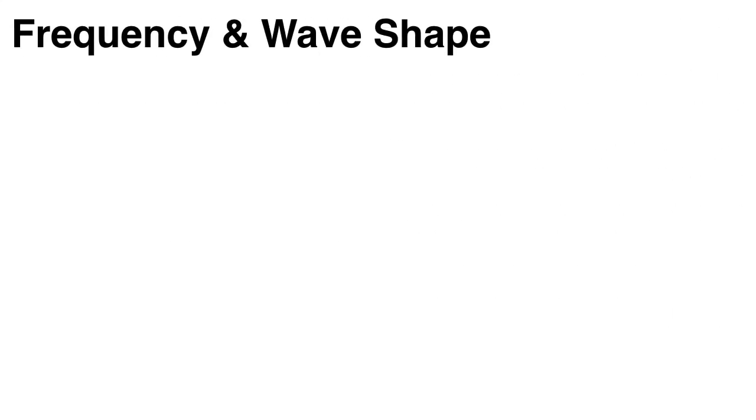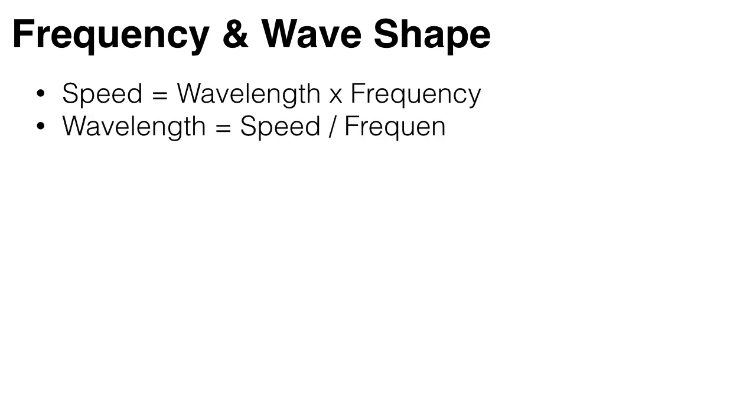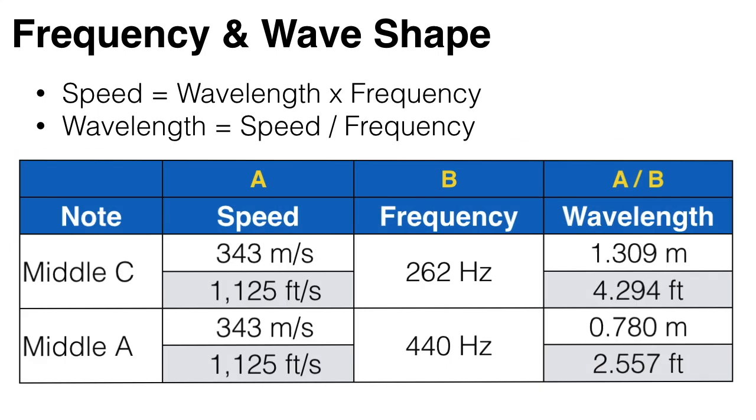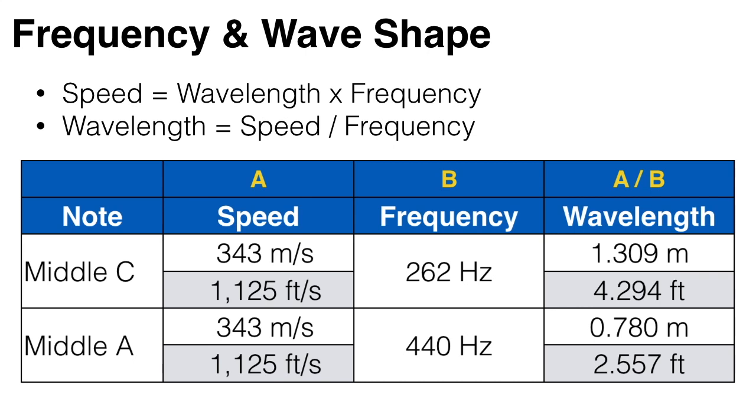Now the equation for speed is wavelength times frequency. So if we wanted to find the wavelength of a note, we would need to divide speed by frequency. So again, speed is 343 meters per second, and middle C is 262 hertz, so that means its wavelength is 1.3 meters.